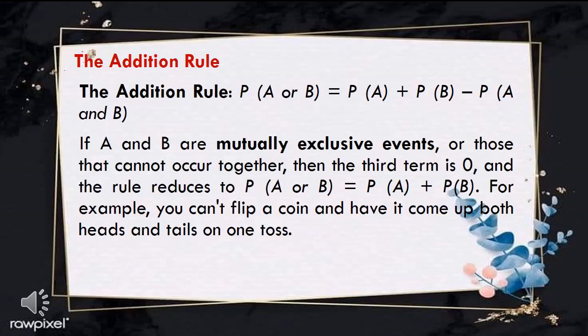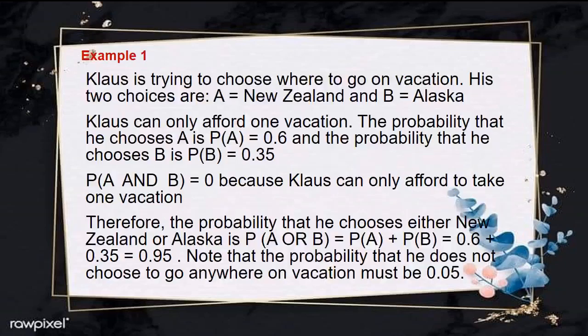Now the second rule: the addition rule. P of A or B equals P of A plus P of B minus P of A and B. If A and B are mutually exclusive events — those that cannot occur together — then P of A and B equals 0, and the rule reduces to P of A or B equals P of A plus P of B. For example, you can't flip a coin and have it come up both heads and tails on one toss.